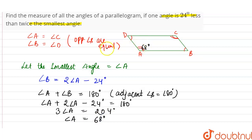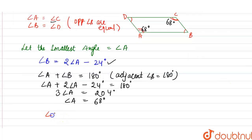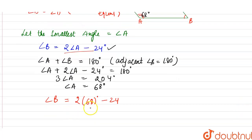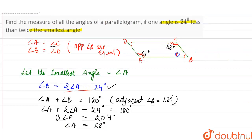Now, if angle A is 68 degrees, then angle C will also be equal to 68 degrees. Now for angle B, we substitute the value: angle B is equal to twice of angle A, so twice of 68 degrees minus 24. That is 136 minus 24, so angle B is equal to 112 degrees. Therefore angle D is also equal to 112 degrees. These are the four angles of the parallelogram.